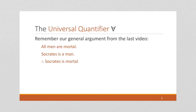The universal quantifier looks like an upside-down A, and it stands for 'for all.' In the argument from the previous video, we had this argument: we said all men are mortal, Socrates is a man, and Socrates is mortal.